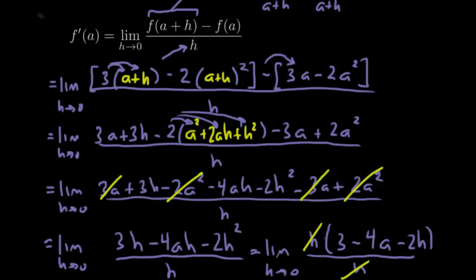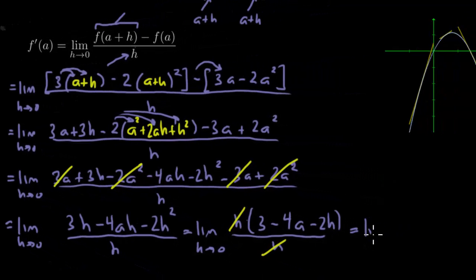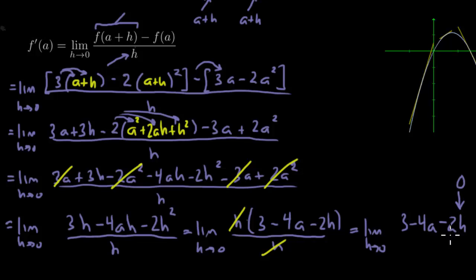And now you can see how the h's will cancel, and that's going to leave me the limit as h goes to 0 of 3 minus 4a minus 2h, and now when you plug in h equals 0, you're going to plug it right in here, which basically cancels that, and you're left with 3 minus 4a.